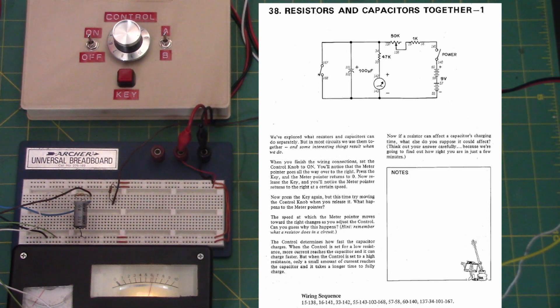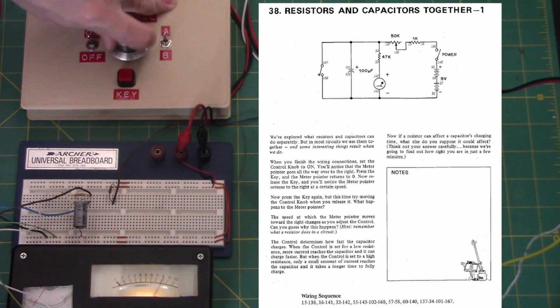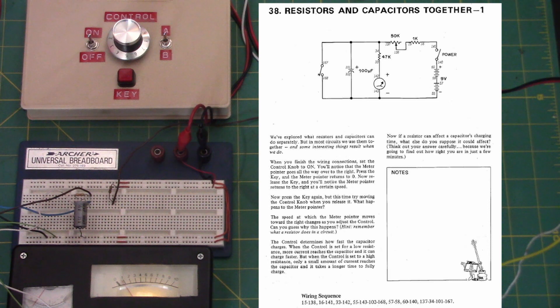Whenever you release the key, the capacitor is charged through the 50k pot and the 1k series resistor. When you turn the resistance all the way down, it's fast, but it's still not immediate because you're charging it through the 1 kohm resistor. When you go all the way to 50k, it's a lot slower as you'll notice.